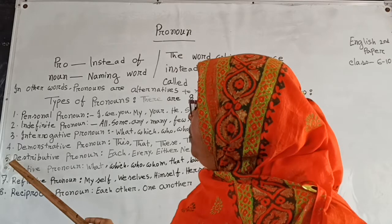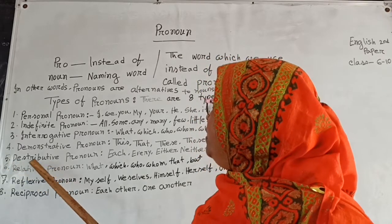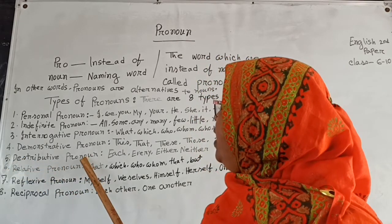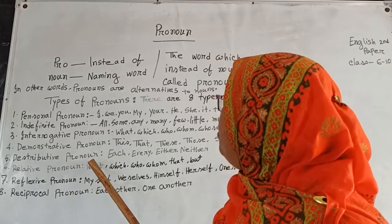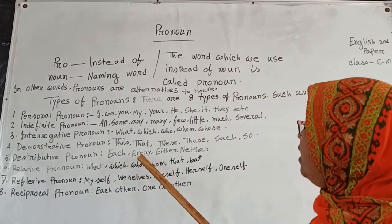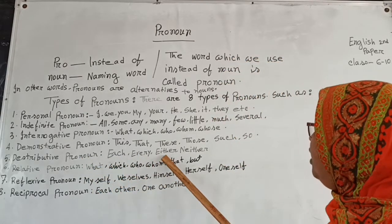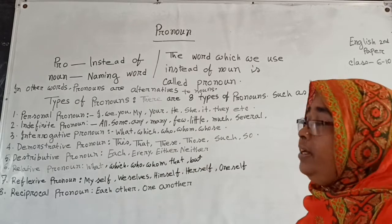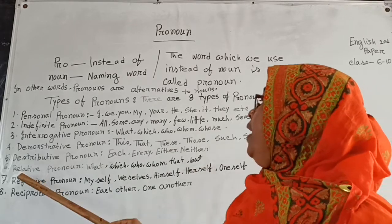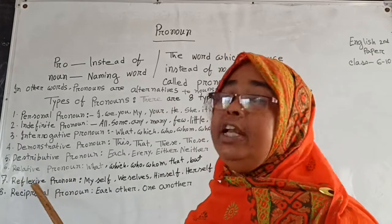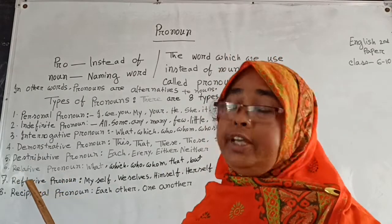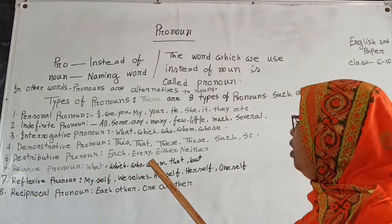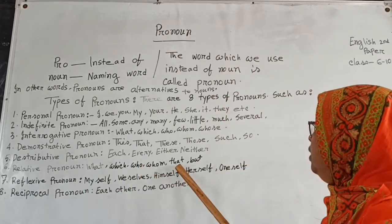Five — distributive pronoun. Six — relative pronoun: who, whom, that, which, whose.